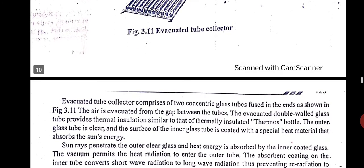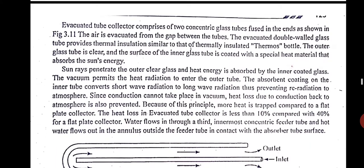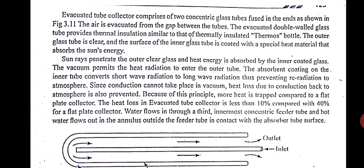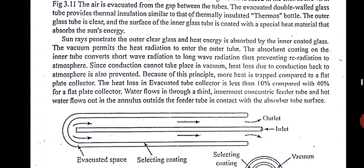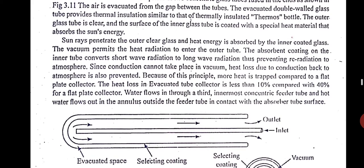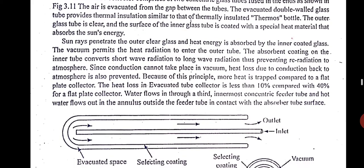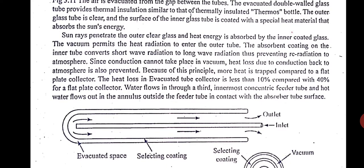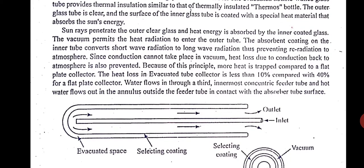The ETC consists of two concentric glass tubes as shown in the picture here. The air is evacuated between the gaps of the tubes. The evacuated double wall glass tubes provide thermal insulation similar to that of a thermos bottle. The outer glass tube is clear, is a plain glass outer glass, and the surface of the inner glass tube is coated with a special heat material that absorbs the sun's energy. You can see here.